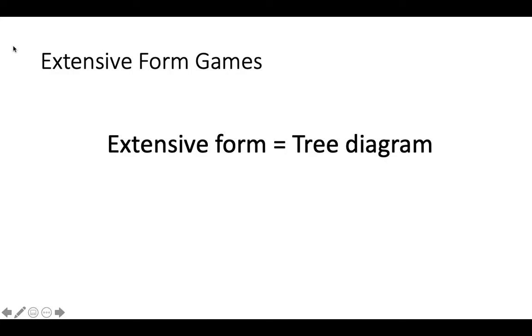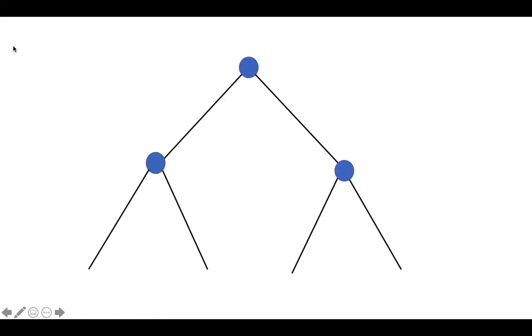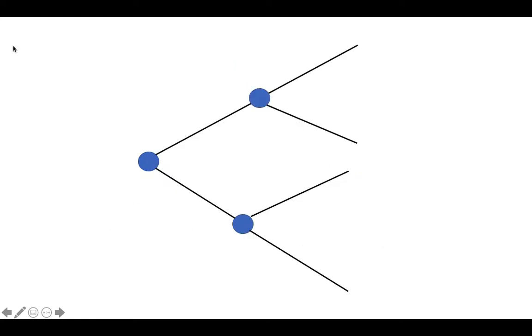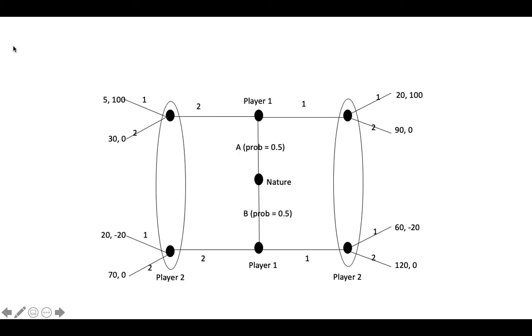We will start building our model using a tool called the Extensive Form Game. An Extensive Form Game is simply a tree diagram of a game. You can draw an Extensive Form Game using a tree diagram that you read from top to bottom, from left to right, or even from the center outward.